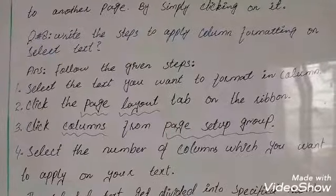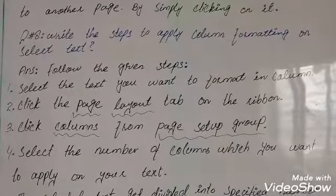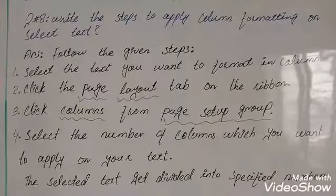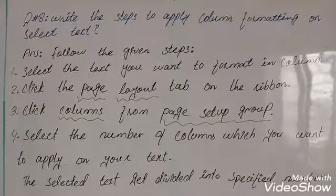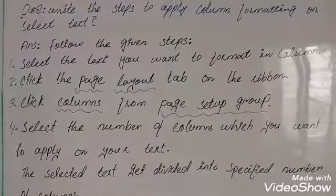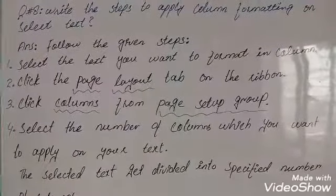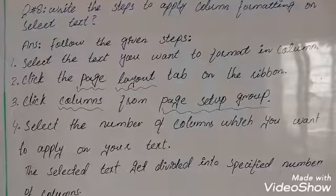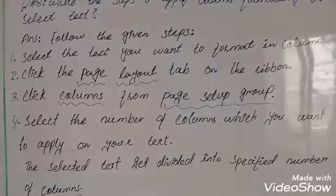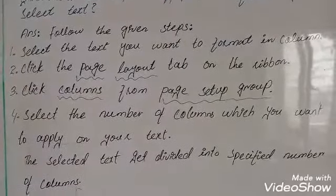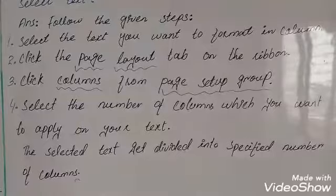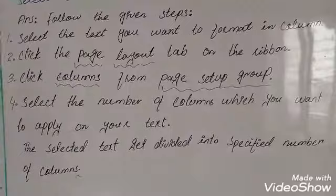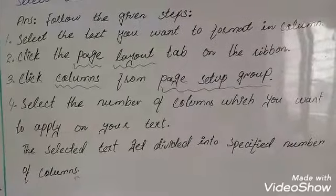Question number eight: write the steps to apply column formatting on selected text. Answer: to apply column formatting, follow the given steps. Step one: select the text you want to format in columns. Step two: click the Page Layout tab on the ribbon. Step three: click Columns from the Page Setup group. Step four: select the number of columns you want to apply on your text. The selected text gets divided into the specified number of columns.